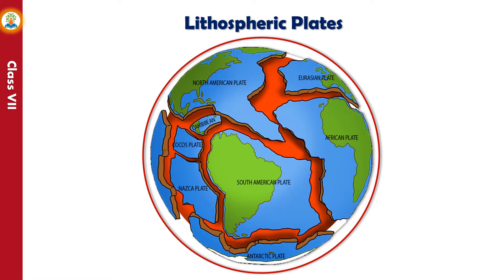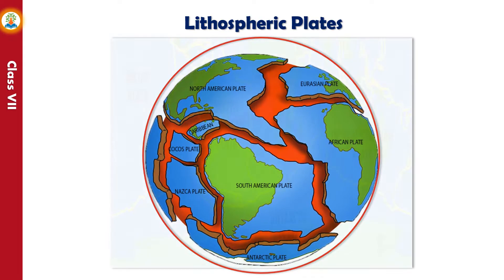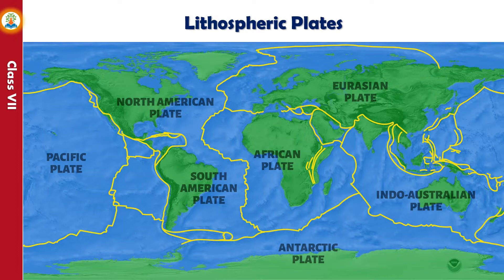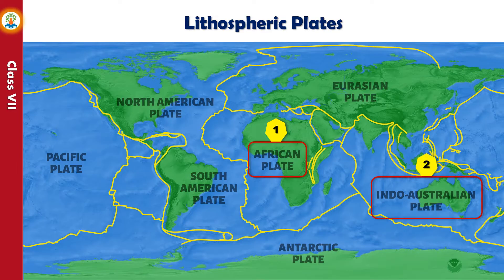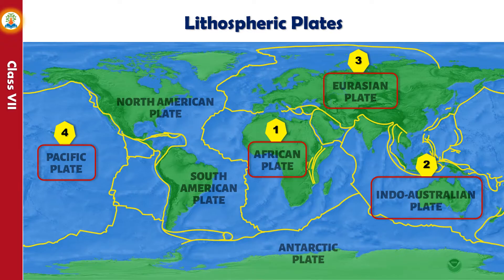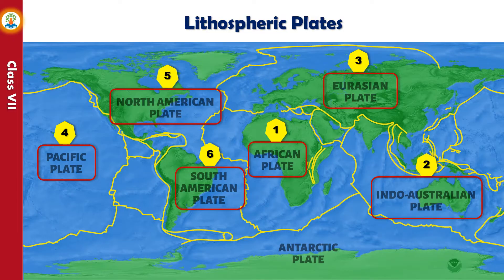The earth's crust is broken up into a series of plates called lithospheric plates. There are seven major lithospheric plates and some minor ones. The seven major lithospheric plates are: the African plate, the Indo-Australian plate, the Eurasian plate, the Pacific plate, the North American plate, the South American plate, and the Antarctic plate.